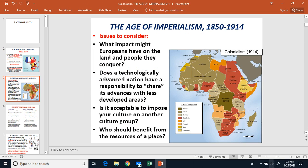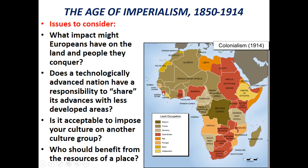This map shows Africa again, but this time in color showing who owns what territory. The gray is French, your red is the British, the gray here is the Germans, the darker gold-yellow is Italy, light yellow is Spain, Portugal is a brownish color, Belgium is the green, and then independent Liberia and Ethiopia are also shown.